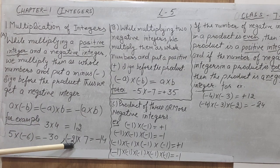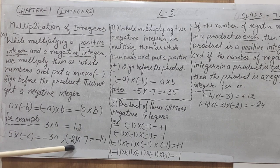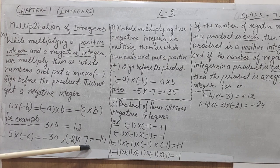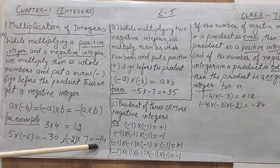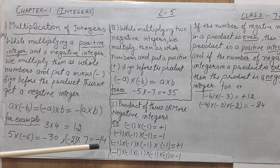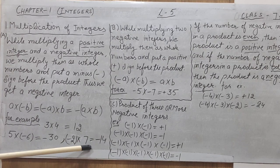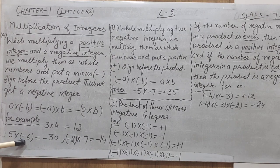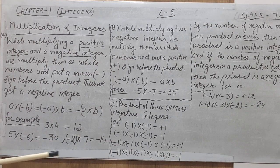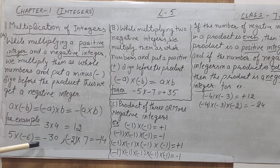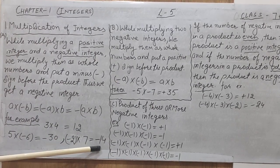Similarly, one more example: the first integer is negative, that is minus 2, and the second integer is positive, that is plus 7. When we multiply two integers — one negative and one positive — the result is a negative integer. So the answer is negative, and we multiply 2 into 7 to get 14, giving us minus 14. In both cases, if one integer is negative, the result is always negative.